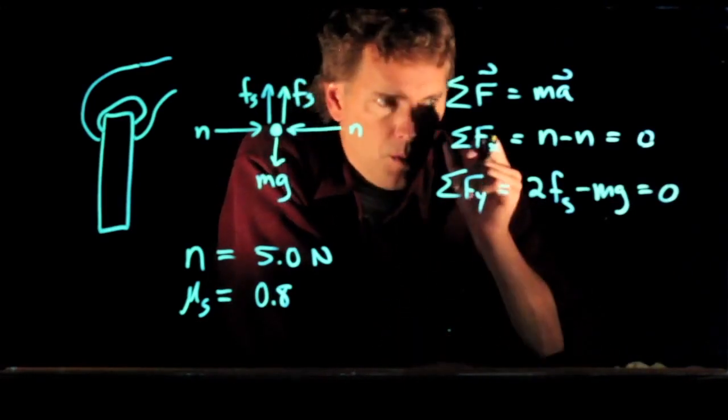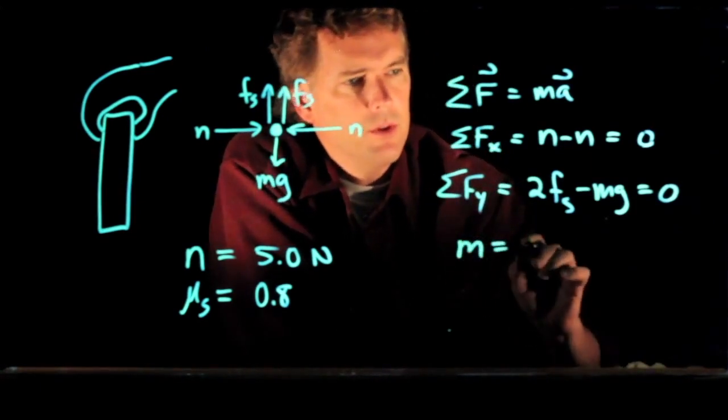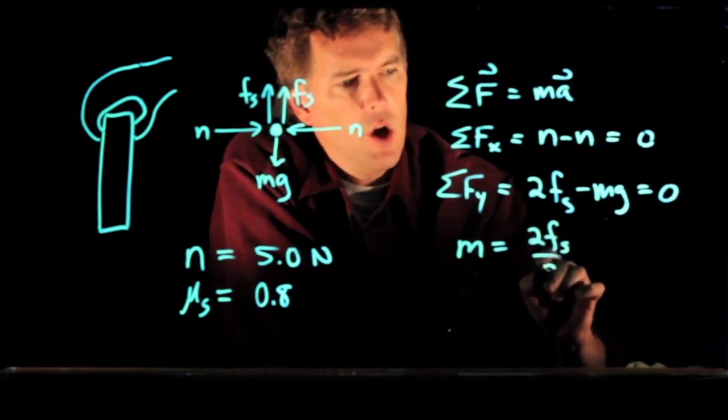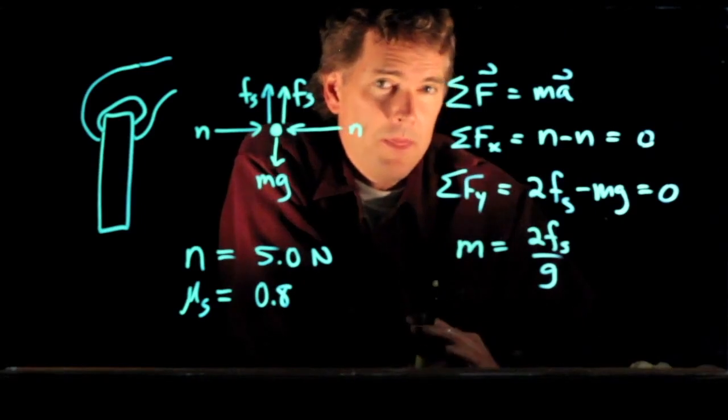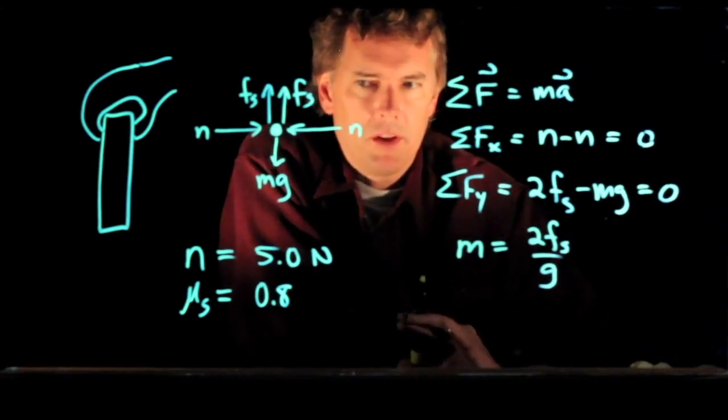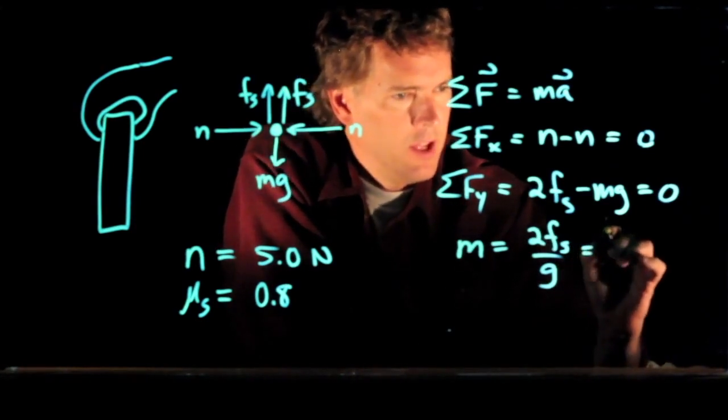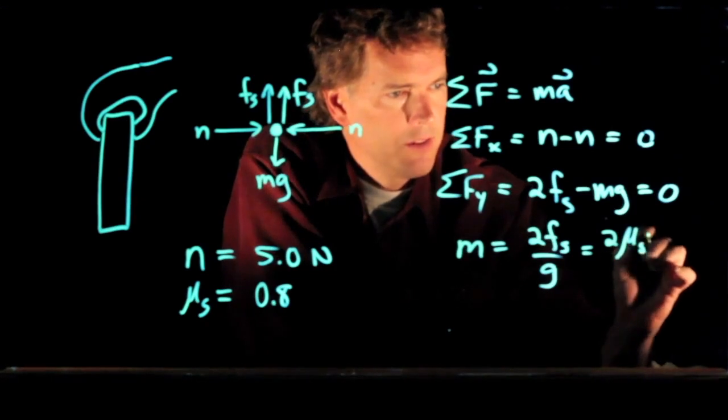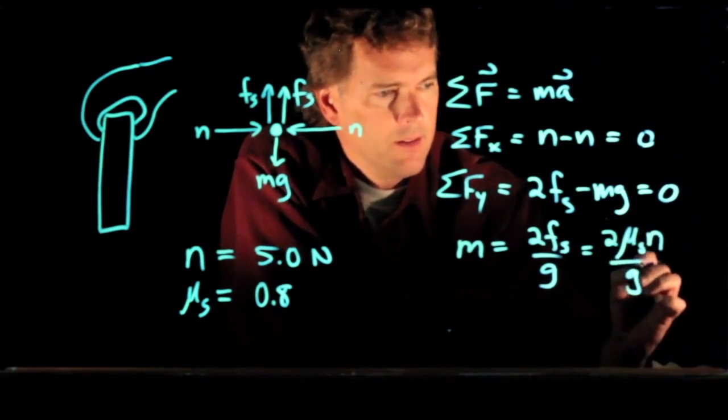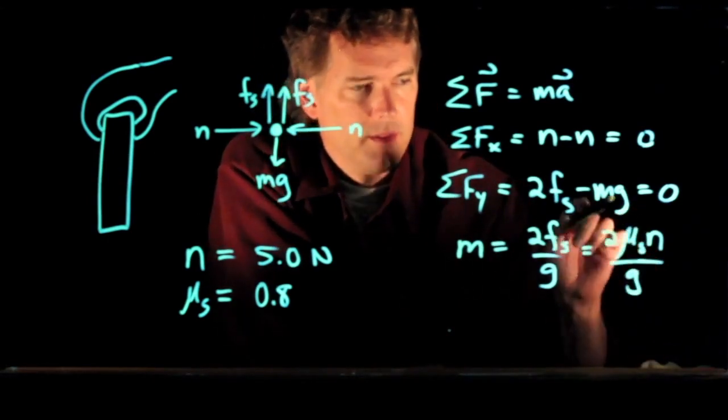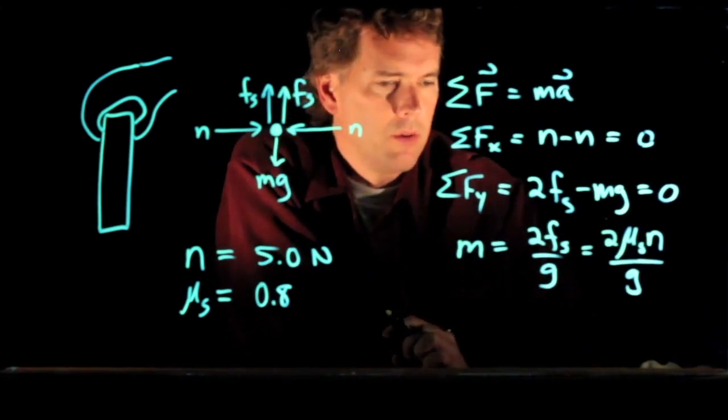So now we can solve this last equation for m. m is equal to 2 F sub S over g. And we know what the maximum frictional force can be. The maximum static frictional force is mu S times the normal force n. That should make sense. The harder you grip it, the bigger n is, the bigger the mass is that you can hold.